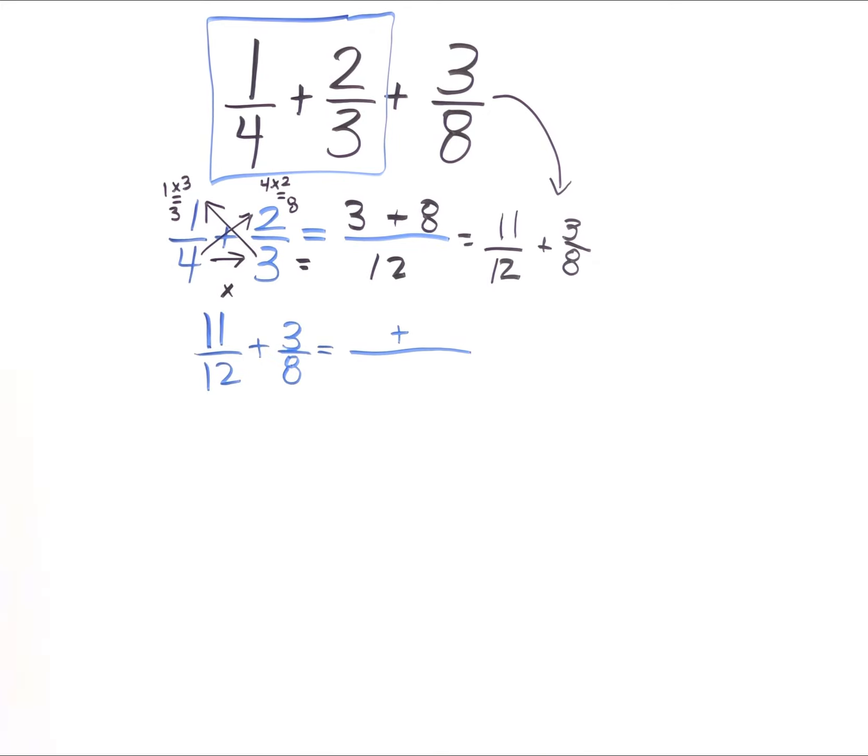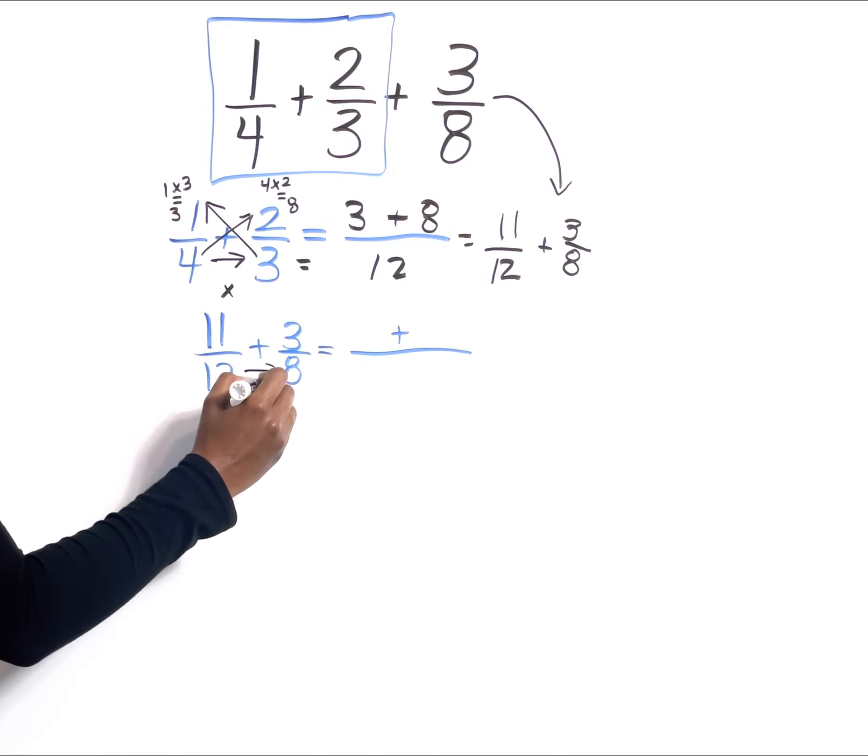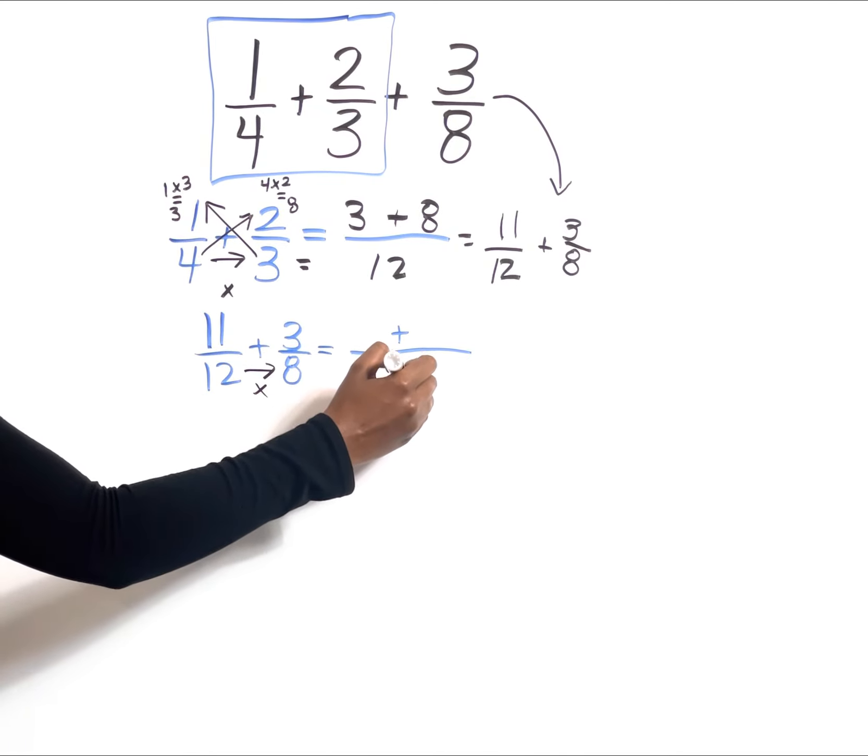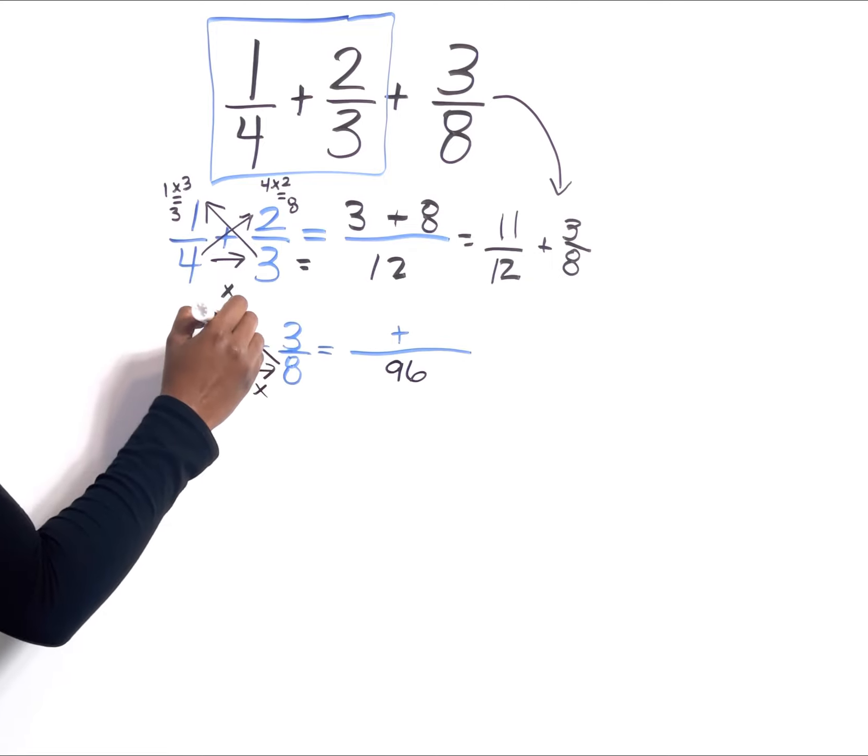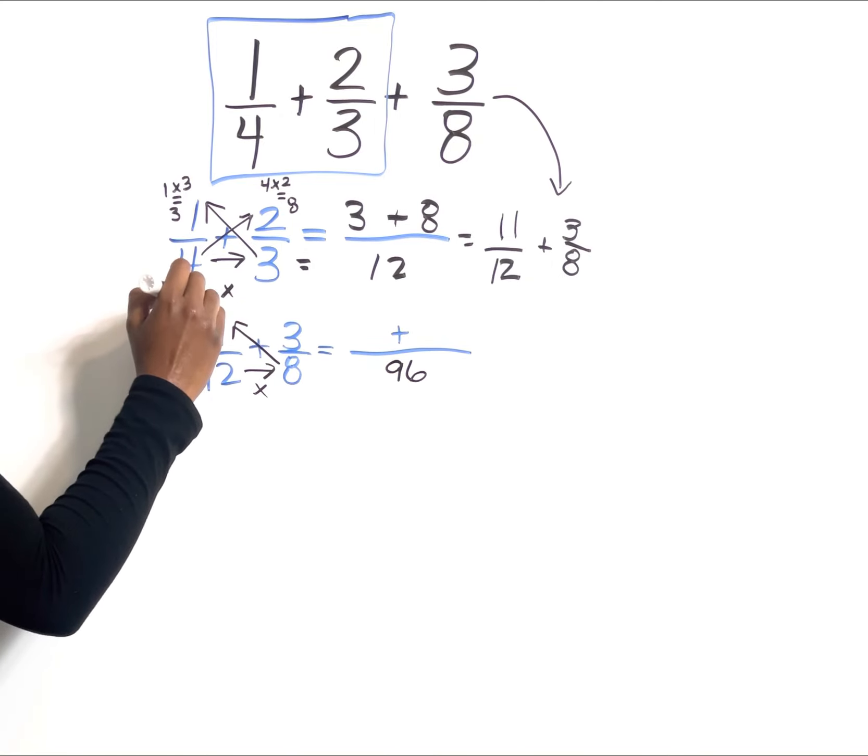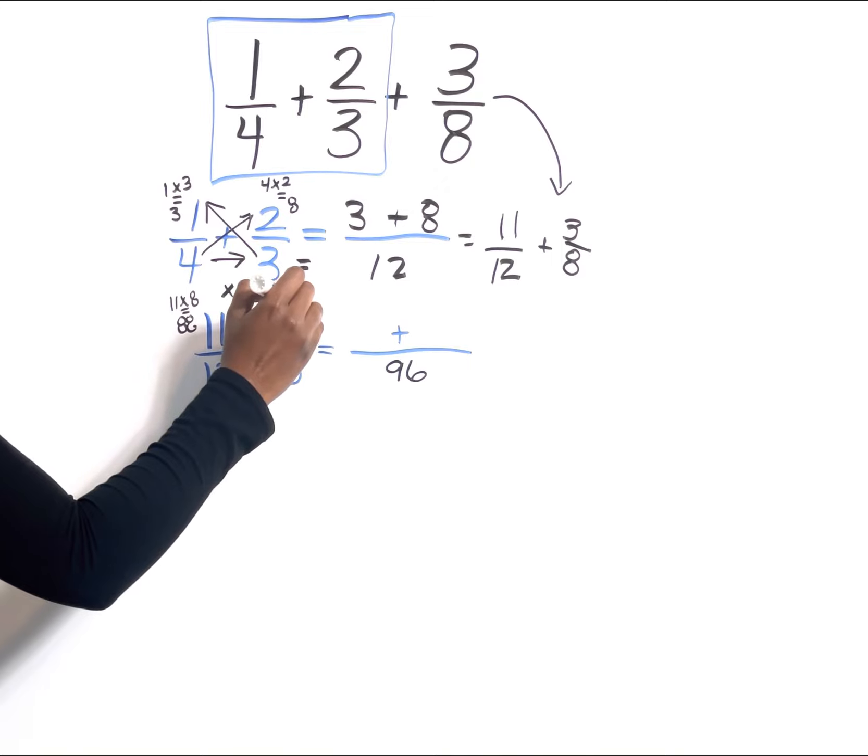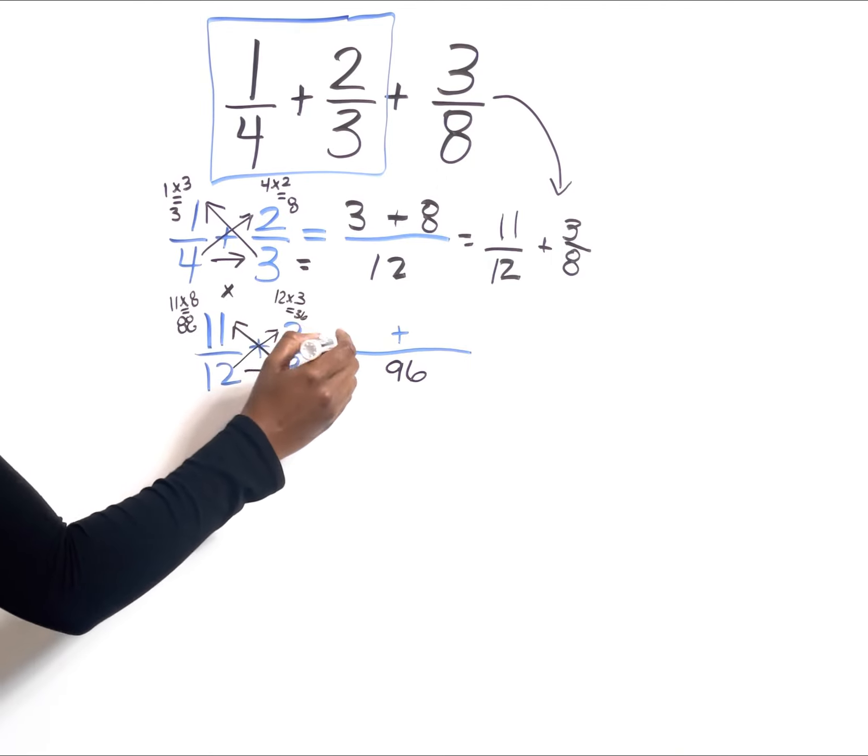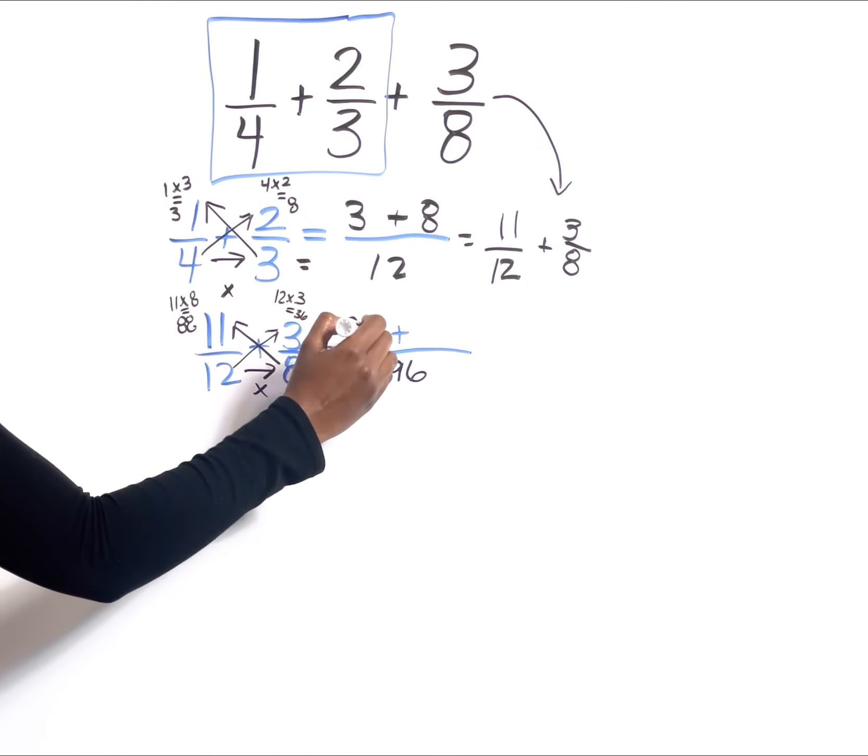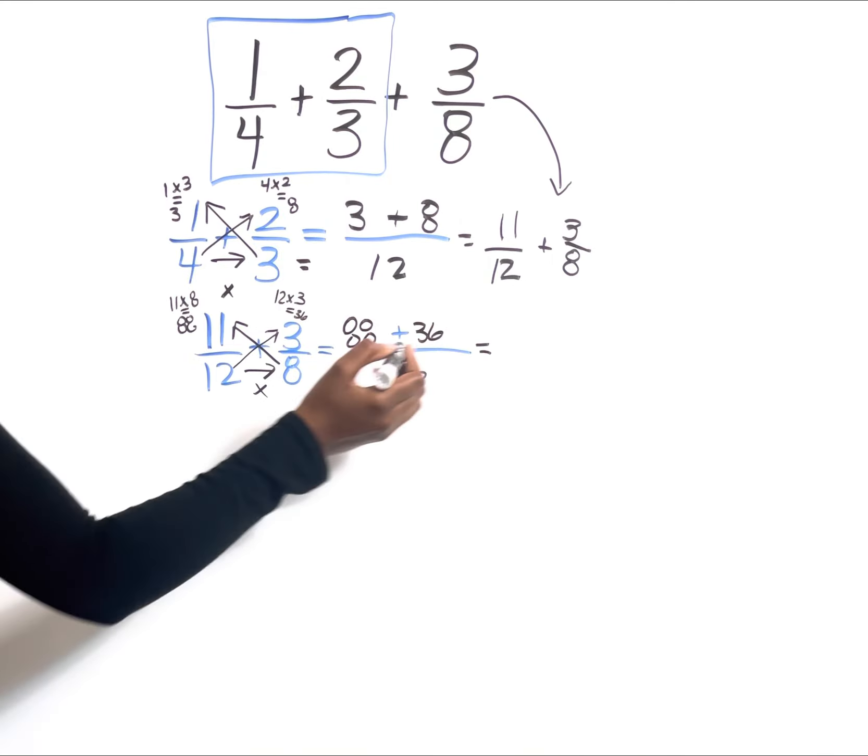We use the butterfly method. Multiply straight across the bottom, so 12 × 8 gives you 96. Cross multiply: 11 × 8 gives you 88, and 12 and 3 give us 36. So we have 88 + 36, which is going to give us 124/96.